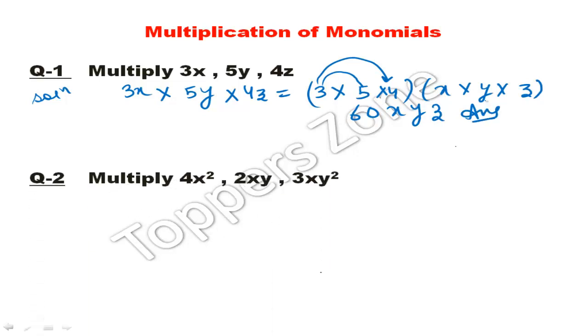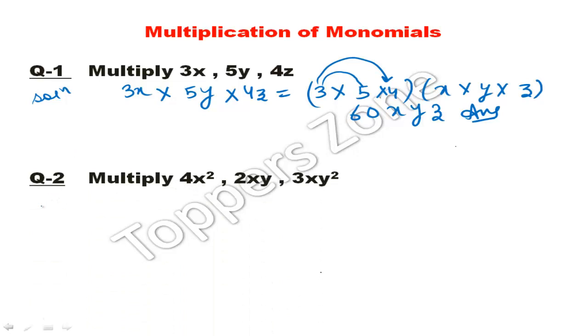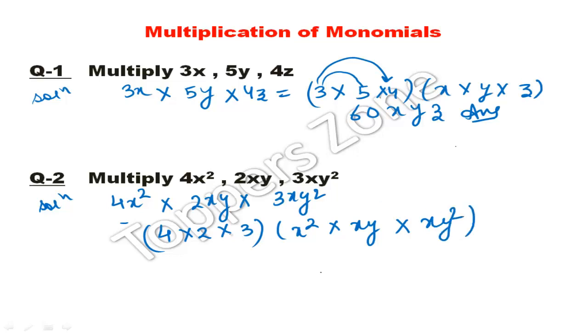Next question: Multiply 4x², 2xy, 3xy². We'll use the same method. Coefficients: 4 into 2 into 3. And the variables: x² into xy into xy². First solve the coefficients: 4 times 2 is 8, and 8 times 3 is 24. Now the powers.